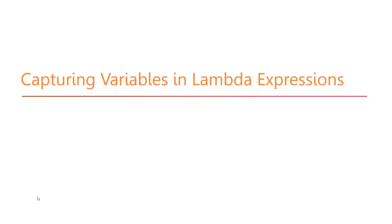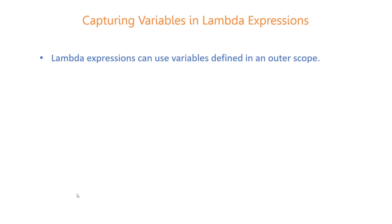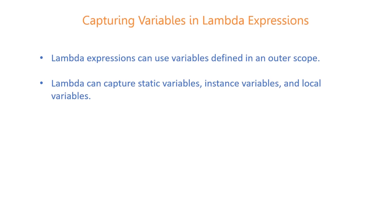The first thing is that lambda expressions can use variables defined in an outer scope — that is, variables defined outside the lambda expression. That's point number one. The second thing is that lambda can capture static variables, instance variables, and also local variables.